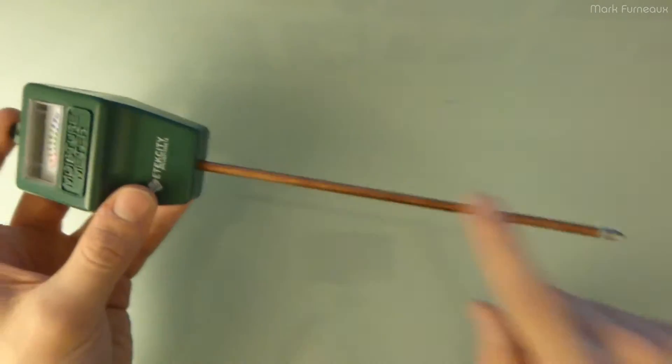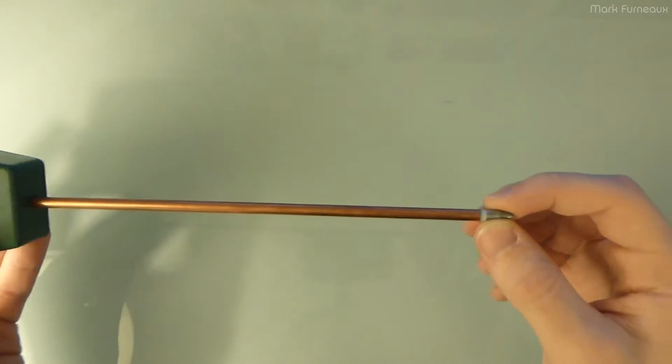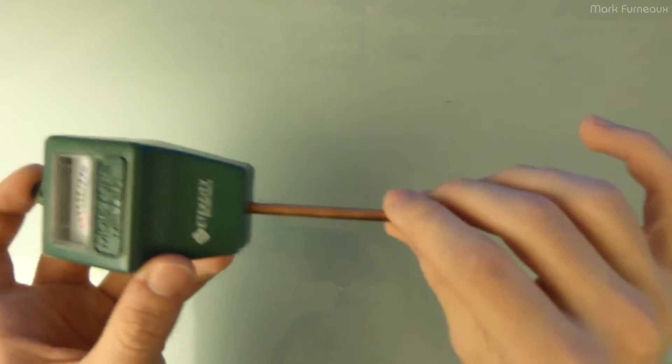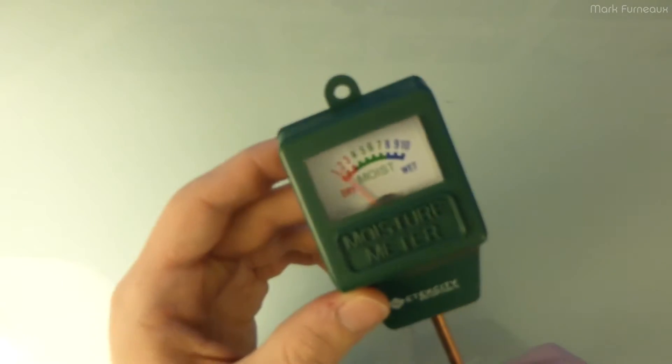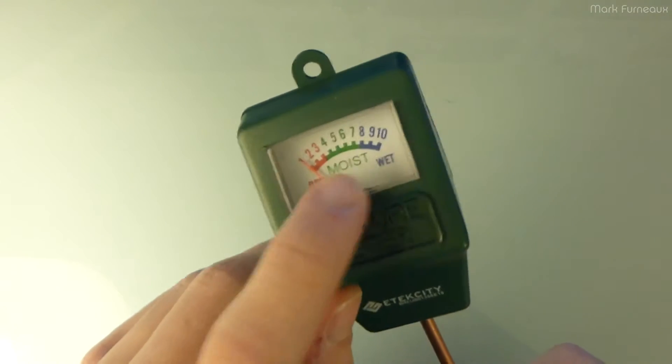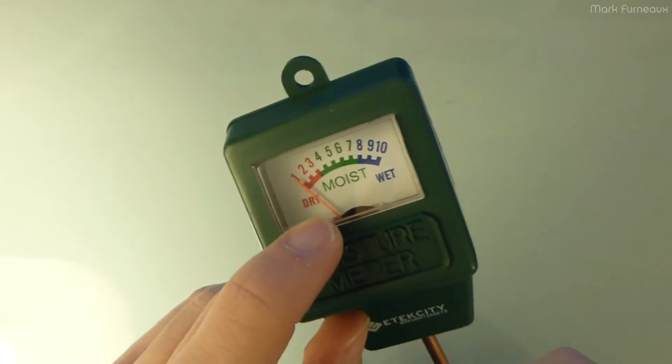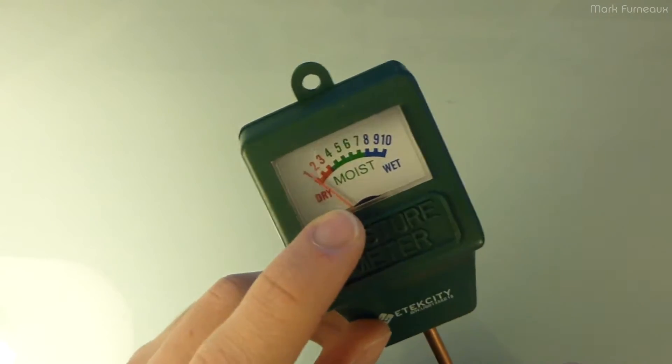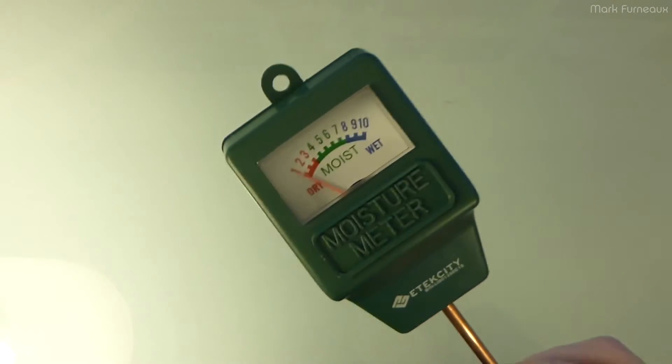Basically, the idea with this is it's just a long spiky probe and you shove this into the soil down to about root level. The meter tells you on some sort of relative scale how much moisture is in the soil so you don't over or underwater your plants, which is of course really important.